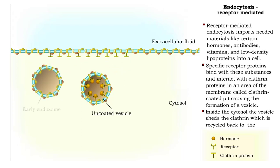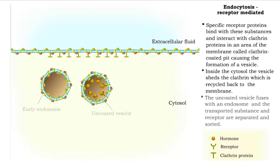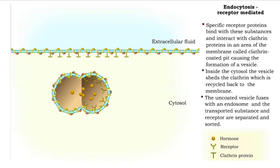The uncoated vesicle now fuses with a vesicle called an endosome, where the substance and the receptor are separated and sorted.